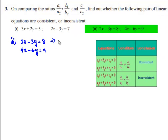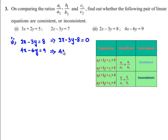The first equation can be written as 2x minus 3y minus 8 equals 0, and the second equation can be written as 4x minus 6y minus 9 equals 0.